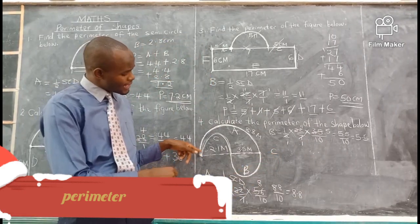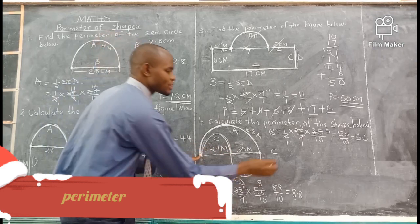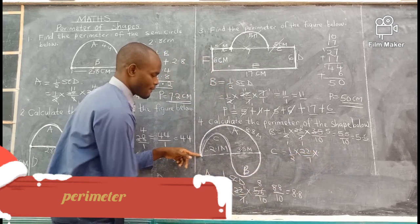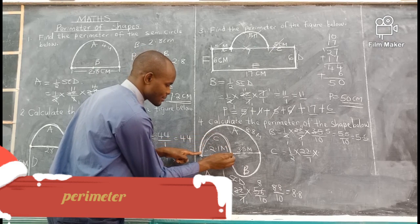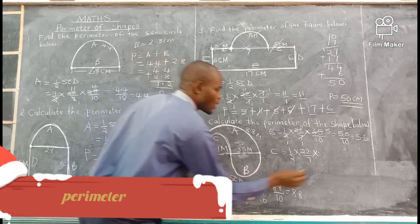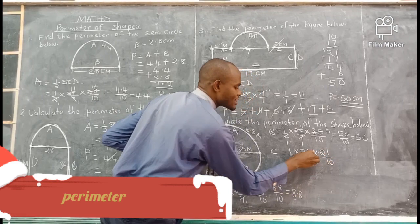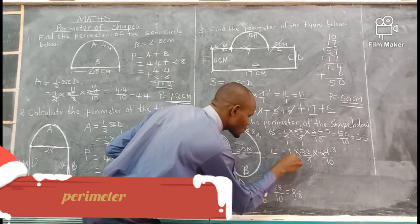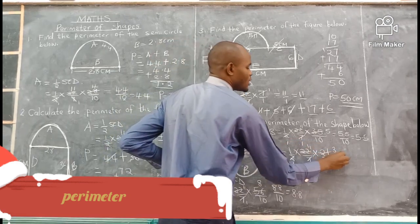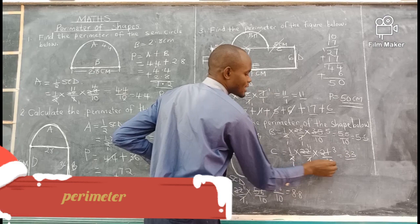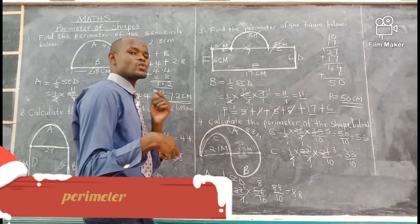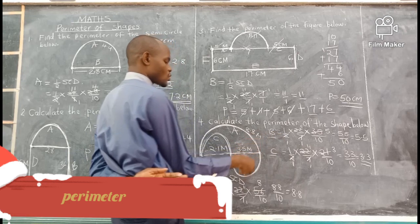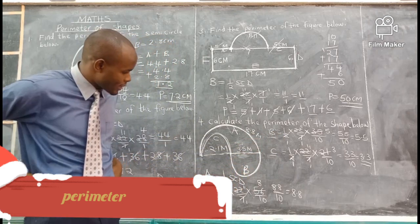Now C. C is also a semicircle, so use the same formula: half times 22 over 7 times the diameter. The diameter of semicircle C is the line joining its two points, which is 2.1. Convert to fraction: 21 over 10. Simplify: 21 divided by 7 gives 3; 22 divided by 2 gives 11. So 11 times 3 gives 33, over 10. Convert to decimal: C equals 3.3. That is the length for C. You add three lines to get the perimeter.